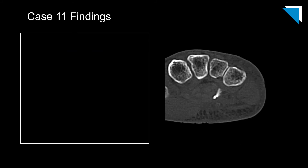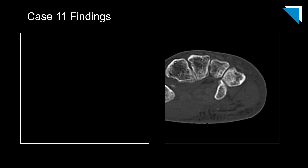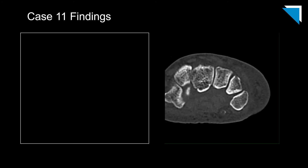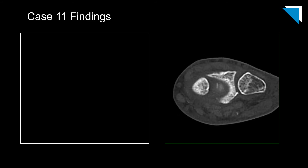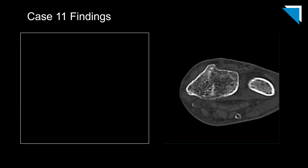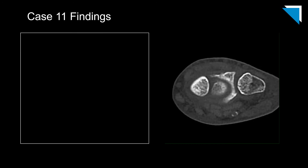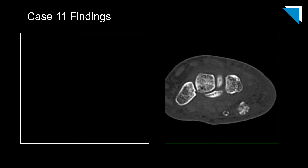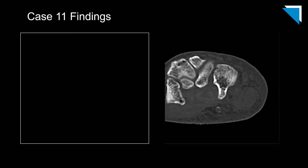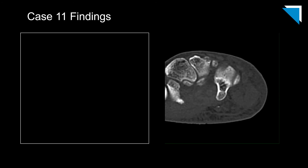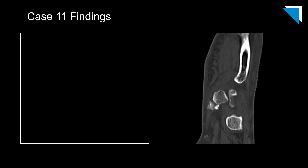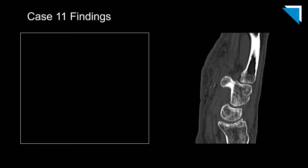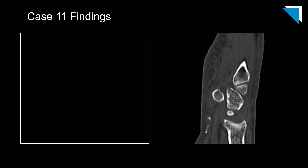As we scroll through the axial images from the follow-up CT scan, we can see that the hydroxyapatite deposition is associated with the flexor carpi ulnaris tendon fibers, which partially insert on the pisiform. The sagittal images from the same study demonstrate the anatomy very nicely — you can see the hydroxyapatite deposition in the substance of the tendon just proximal to the insertion.